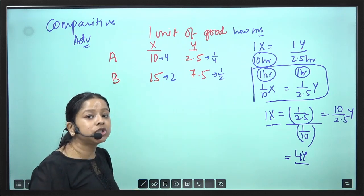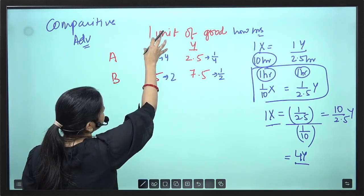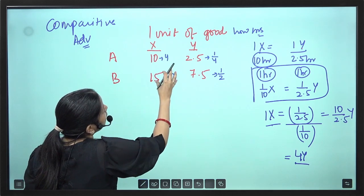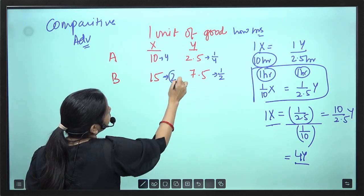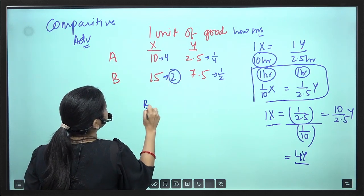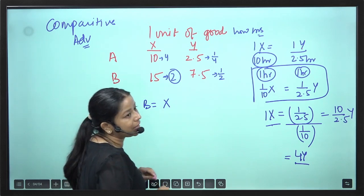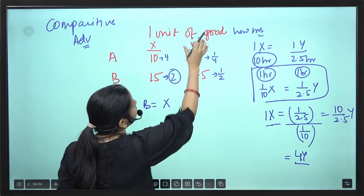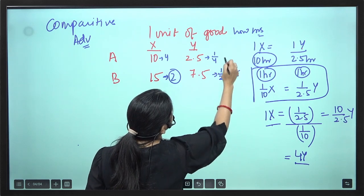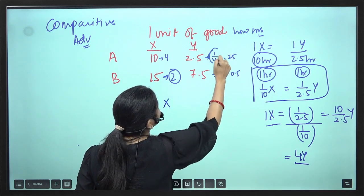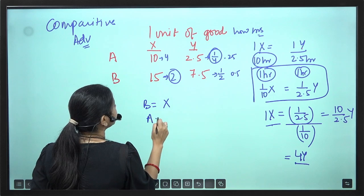The country whose opportunity cost of producing a good is lower has the comparative advantage in that good. For X, the opportunity cost is lower in Country B (2 vs. 4), so Country B will produce X — it has the comparative advantage in X. For Y, the opportunity cost is lower in Country A (0.25 vs. 0.5), so Country A will produce Y.